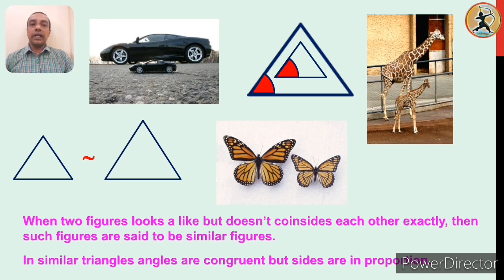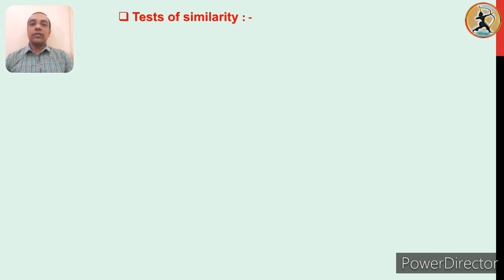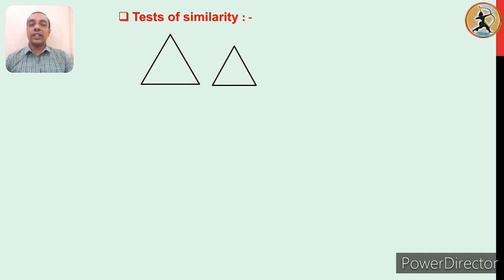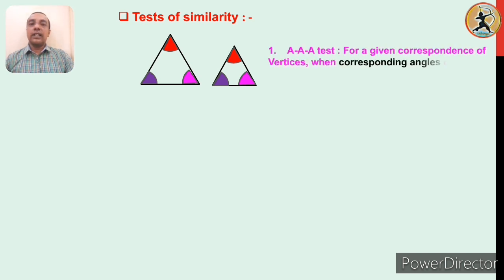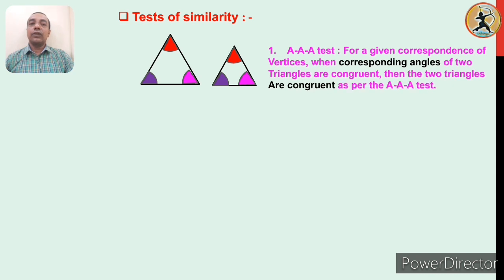Let us see some tests of similarity. For the first test, consider two triangles. If the three angles of the first triangle are congruent to the corresponding three angles of the second triangle, then those two triangles will be similar to each other by the AAA test of similarity.